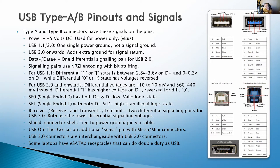With USB 2.0 and onwards they decreased these differential voltages to millivolts. A differential one would be 360 to 440 millivolts, and the low part would be minus 10 to 10 millivolts — so they significantly reduced the amount of voltage swing.